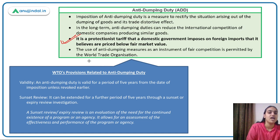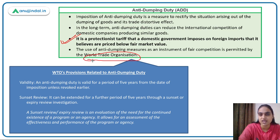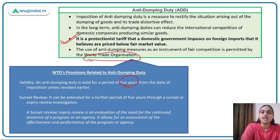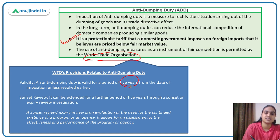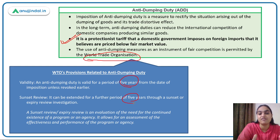The World Trade Organization permits countries to use anti-dumping measures to ensure fair competition. Under WTO provisions, anti-dumping duty can be imposed for a period of five years unless revoked earlier. There is also a sunset review provision, where you can evaluate whether the measure needs to be extended further, and if so, you can continue it for an additional five years through this review.